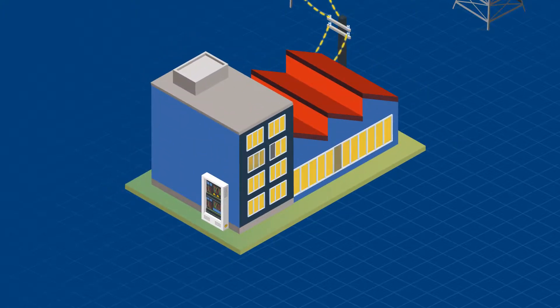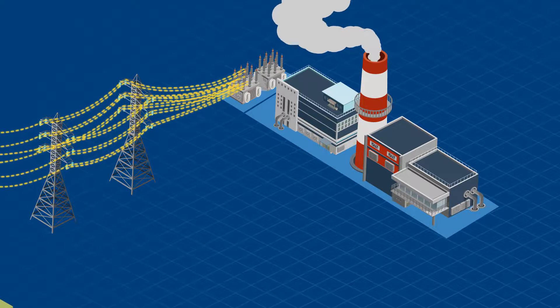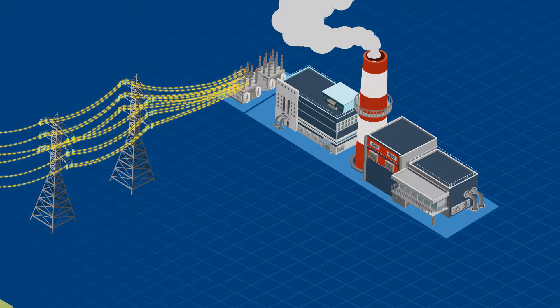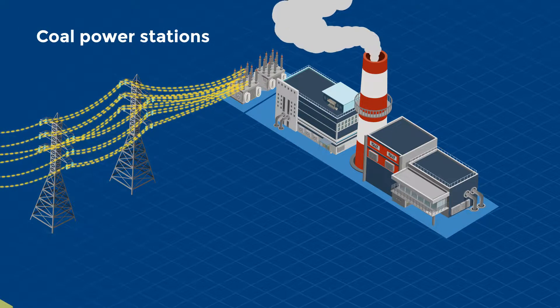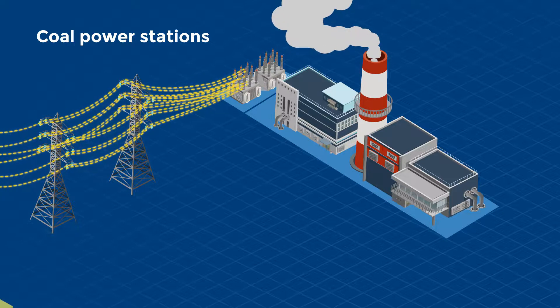What if businesses could take their power back? Traditional electricity generation relies on centralized utilities that produce energy from a few large sources such as coal power stations. This model can leave businesses forced to live with expensive and unreliable electricity.